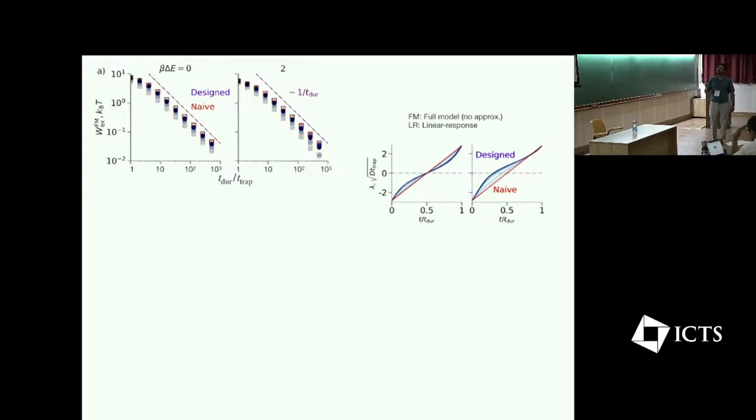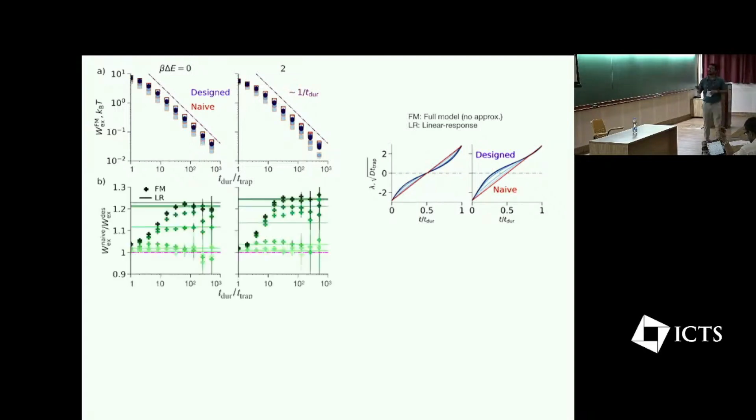So I will use this knife and design protocol to compute excess work and to see whether design or optimal protocol is working better or not. So let me first show how does the excess work behave as a function of protocol duration. Obviously it decreases with protocol duration. This is because when protocol duration is larger, dissipation will be smaller. And to check whether design protocol is performing better than the knife one, we take the ratio of knife dissipation divided by design dissipation. And we can see that for considerable protocol duration, design protocol is performing better when the ratio is above one.